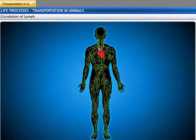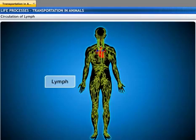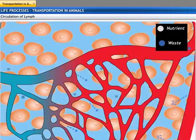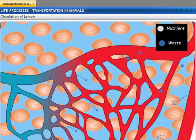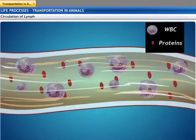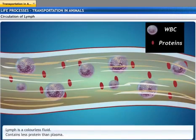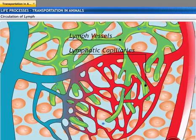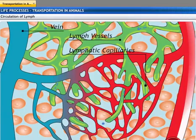The circulatory system also uses lymph or tissue fluid to transport substances through the body. Blood supplies nutrients to the tissues and collects the waste products which do not get absorbed by the tissues. The waste products and any excess fluid diffuse into the intercellular spaces of the tissues and then form the tissue fluid or lymph. Lymph is similar to the plasma in blood, but it is colorless and contains less protein. Once lymph is formed in the intercellular spaces, it drains into lymphatic capillaries, which join to form larger lymph vessels that finally open into larger veins, ultimately carrying the lymph back into the blood.